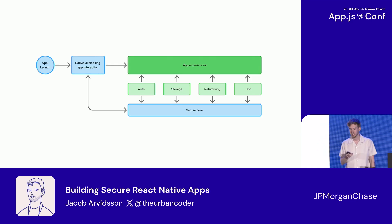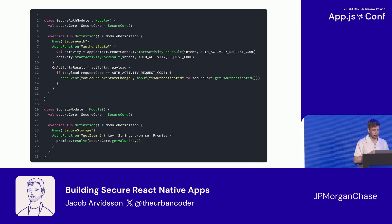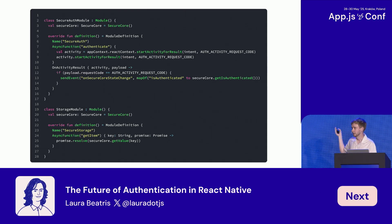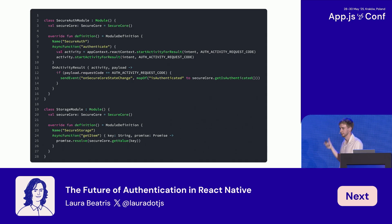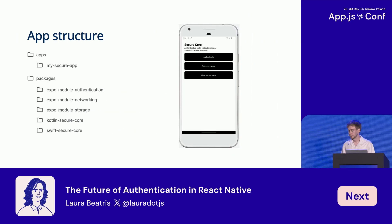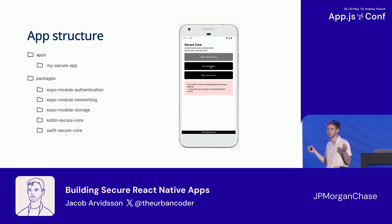This is also a problem in Greenfield apps. We have two Expo modules: an authentication module that starts a native activity and holds an instance of the secure core, and a storage module that also has an instance of the secure core. The problem is that when you try to get data it doesn't work because both modules have different instances of the secure core — so authenticating in one doesn't affect the other.